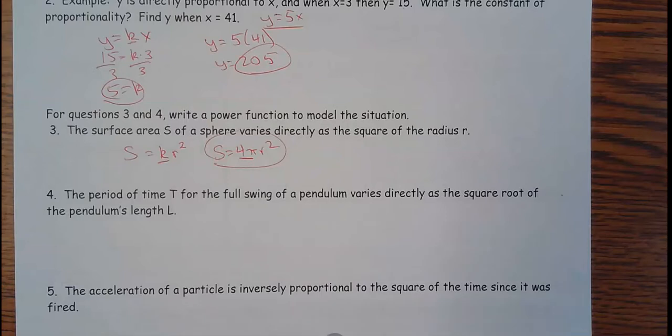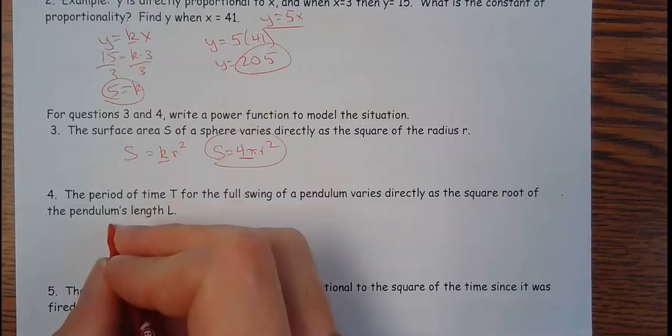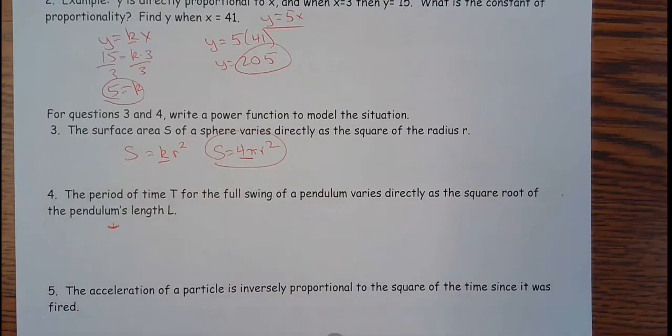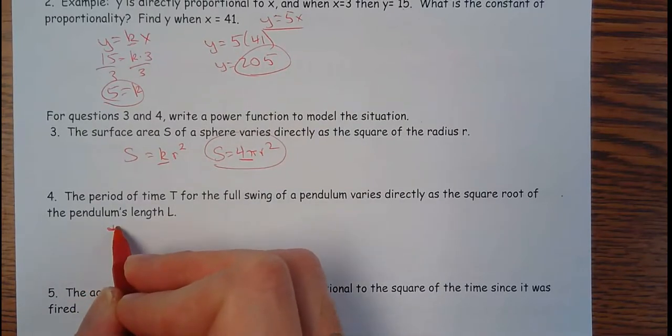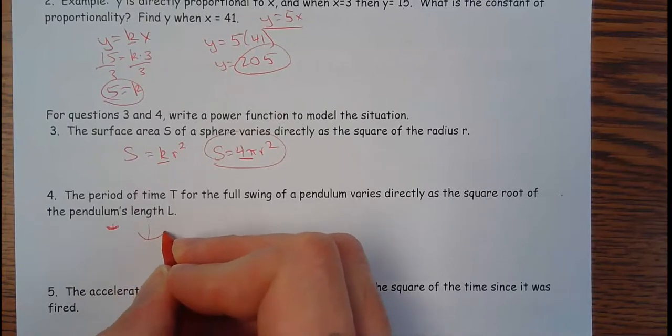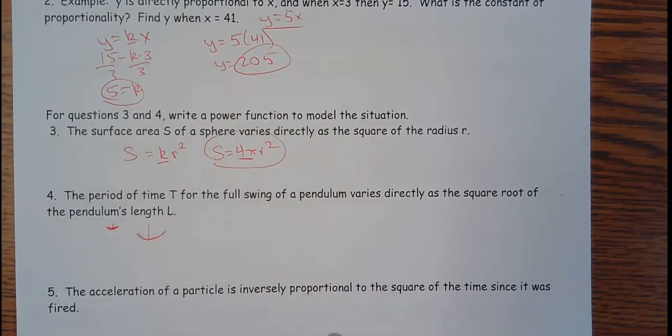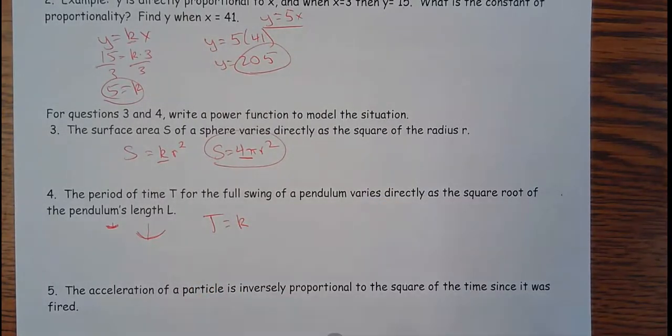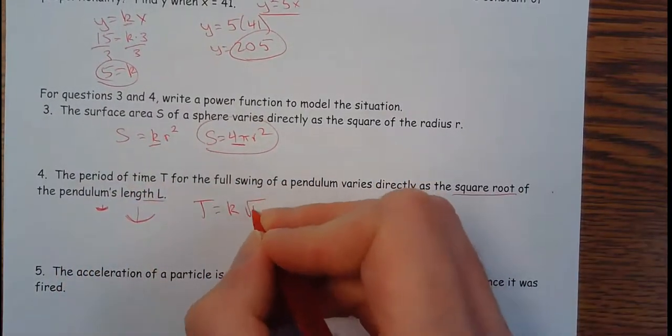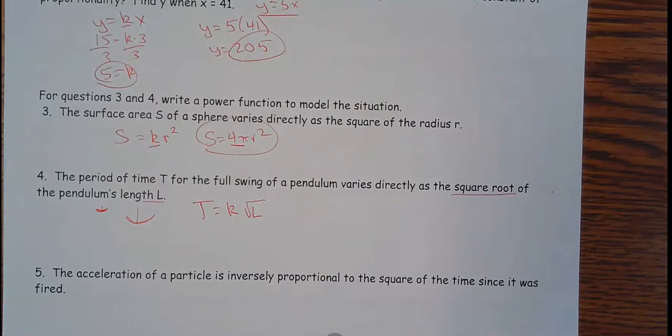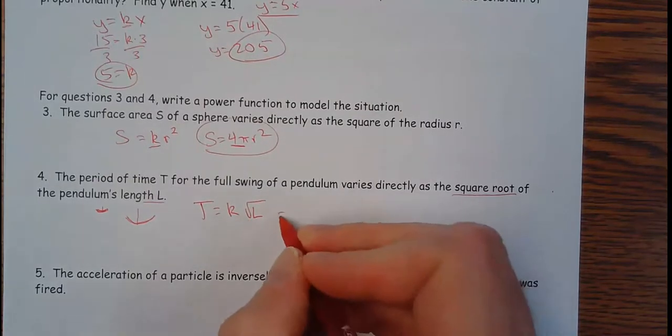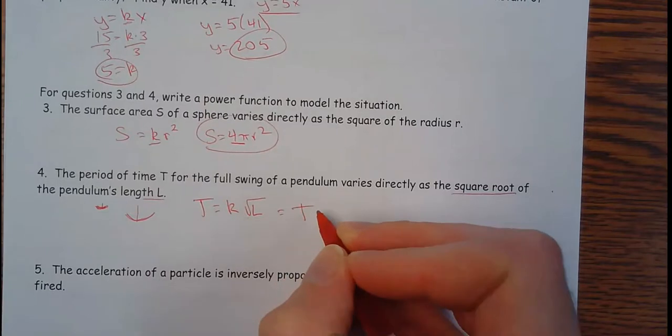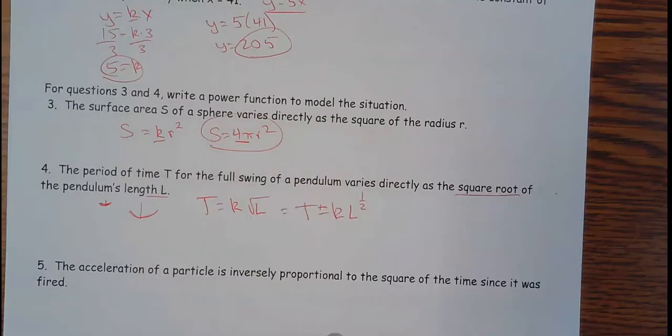The period of time t for a full swing of a pendulum varies directly as the square root of the pendulum's length. If it has a short length, it's going to go back and forth pretty fast. If it's a longer string, it's going to take longer to go back and forth. So it's directly proportional. It says that the time varies directly, so there's going to be a k in there. k times the square root of the length l. Now, they want this as a power function. I've got to put t equals k l to the 1 half.